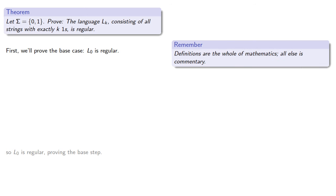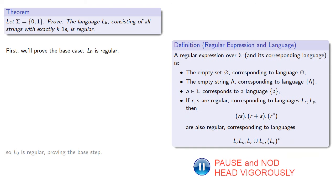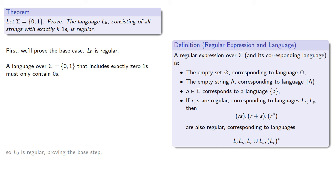So how do we do that? Remember, definitions are the whole of mathematics. All else is commentary. We want to say something about L0 being regular, so let's pull in our definition of what a regular language is. So a language over a symbol set that includes exactly zero ones must contain only zeros. So an expression for this language would be...